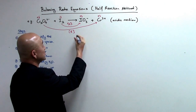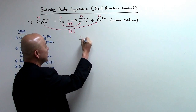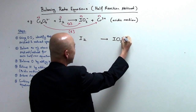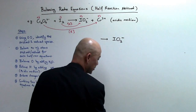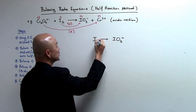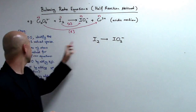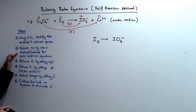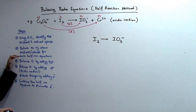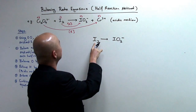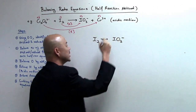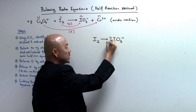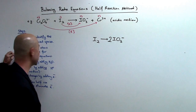Let's do the oxidation half first. I₂ will become IO₃⁻. We are going to go to step 2, which is to balance the number of atoms oxidized or reduced for each half reaction equation. This is your oxidation half. The iodine on the left has 2 atoms, on the right there is only 1, so I multiply the right side by 2. So we are at step 2.